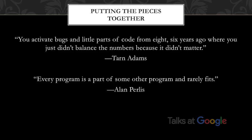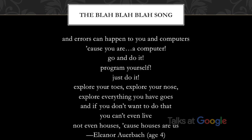Rota echoes Plato, who was one of the first to find that truth is a practical matter — a matter of action rather than pure theoretical abstraction. In Paul Friedlander's summary: "Truth in Plato's system is always both reality of being and correctness of apprehension and assertion." Or in William James' words: "Truth happens to an idea. It becomes true, is made true by events." The troublesome gap is not between logic and language, but between logic and reality. Symbols and proofs cannot close that gap on their own. Three final quotes: Tarn Adams, author of Dwarf Fortress — "You activate bugs in little parts of the code from eight, six years ago where you just didn't balance the numbers because it didn't matter." Alan Perlis: "Every program is a part of some other program and rarely fits." And finally, a song my daughter wrote: "Errors can happen to you and computers, because you are a computer. Go and do it. Program yourself."